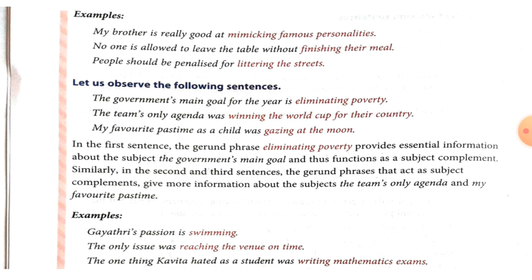In the third sentence: 'My favorite pastime as a child was gazing at the moon.' Here, 'gazing at the moon' is the gerund phrase and it is the subject complement of the subject 'my favorite pastime as a child'. Some more examples: First, 'Gayatri's passion is swimming.' Second, 'The only issue was reaching the venue on time.' Third, 'The one thing Kavita hated as a student was writing mathematics exams.' In each case, 'swimming', 'reaching the venue on time', and 'writing mathematics exams' function as subject complements.